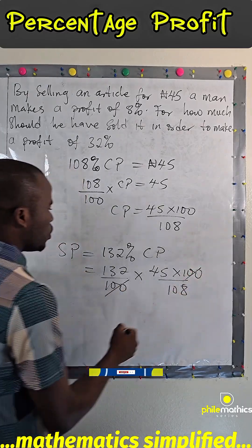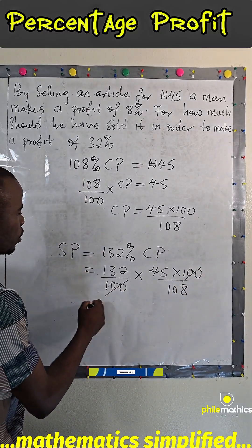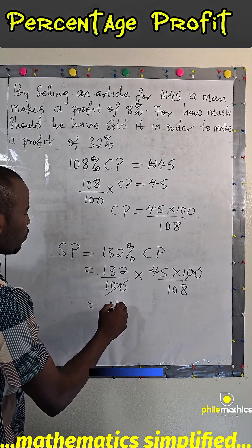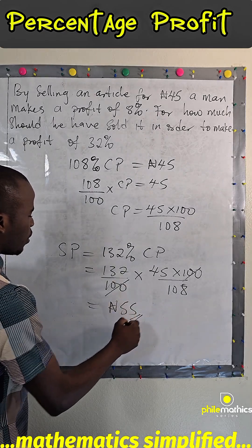100 can cancel 100. And if we divide this, we'll have 55 Naira.